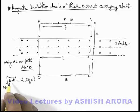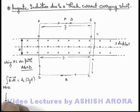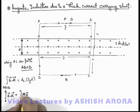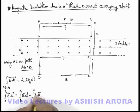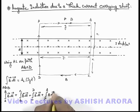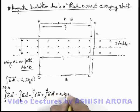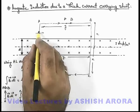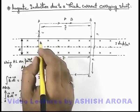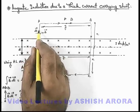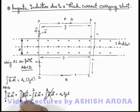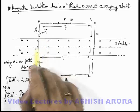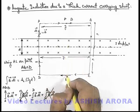Now for this path, if we split it into 4 segments AB, BC, CD, and DA, it becomes the sum of integrals from A to B, B to C, C to D, and D to A of B·dl, equal to μ₀jyd. Along paths DA and BC, the magnetic induction at every point is perpendicular to the elemental length dl, so the dot product B·dl is zero along both these paths.